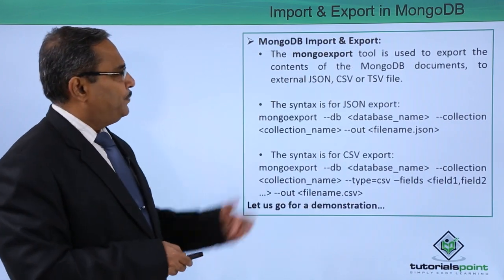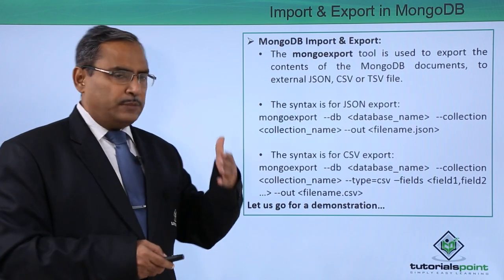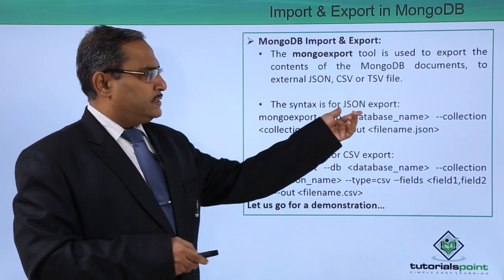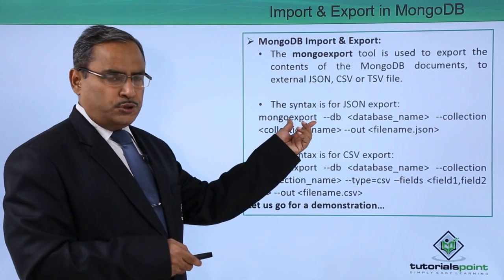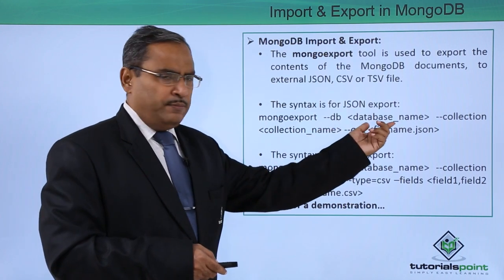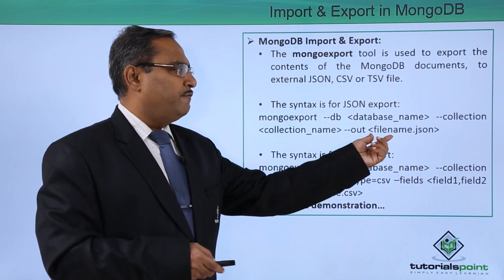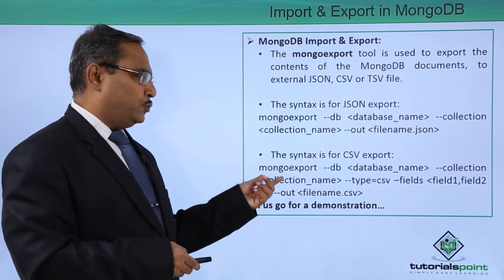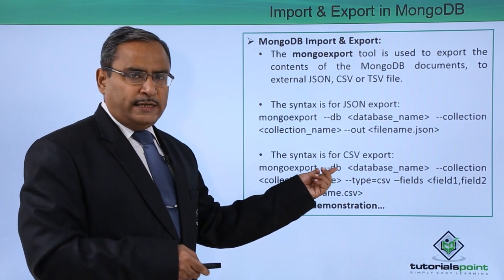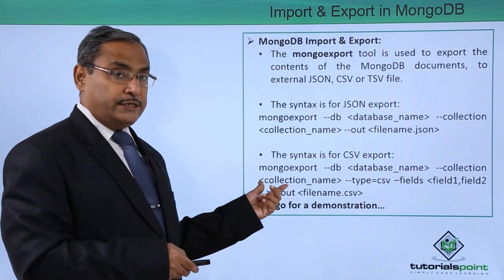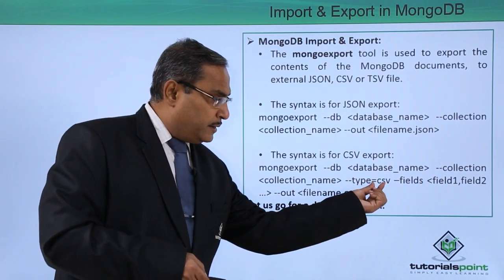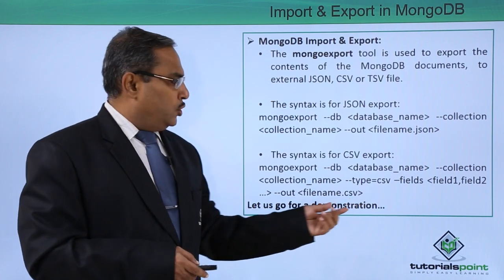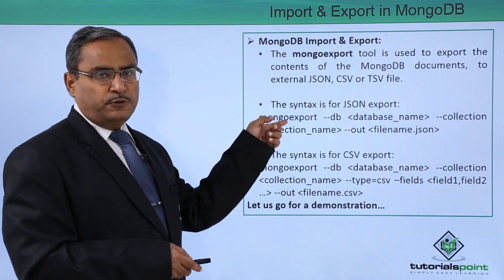The mongoexport tool is used to export the contents of MongoDB documents to an external JSON, CSV, or TSV file. The syntax for JSON export is: mongoexport --db [database name] --collection [collection name] --file [filename.json]. For CSV export, the syntax is: mongoexport --db [database name] --collection [collection name] --type=CSV --fields [field1, field2] --output [filename.csv].